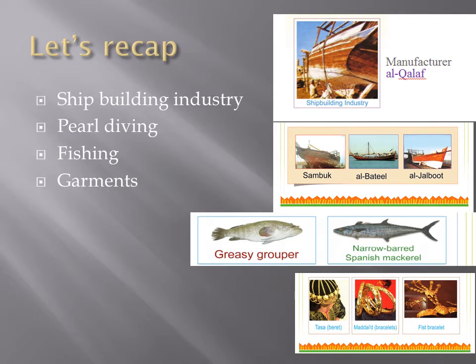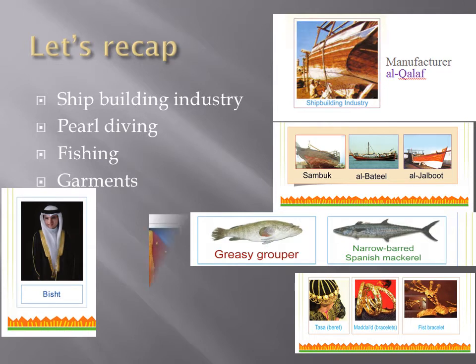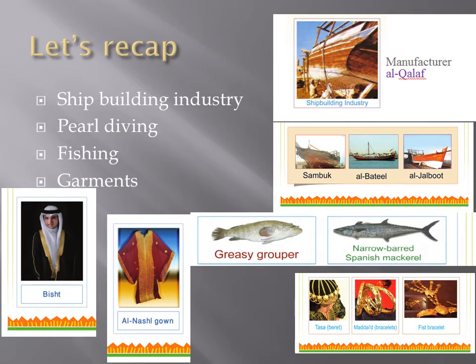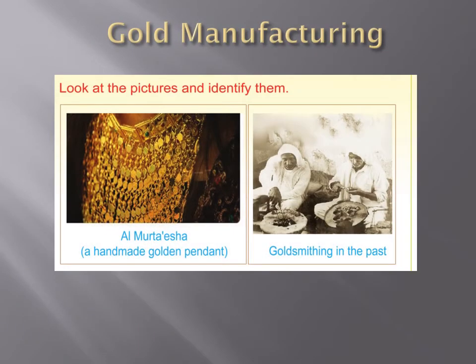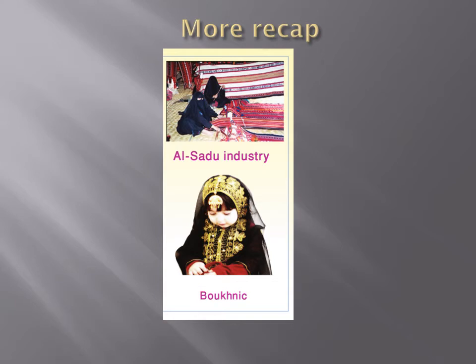And these are the beautiful jewelry that we saw: tasa, madaid, and fist bracelet. Here's a vest, and this is an al-nashal gown. At a glance, you know what all you studied recently — isn't that great! Now let's see what we can cover today. Gold manufacturing — look at the picture and identify them. Okay, this is al-murtaisha. More recap: remember we learned about the al-sadu industry and the pretty little girl wearing a beautiful bock knick.